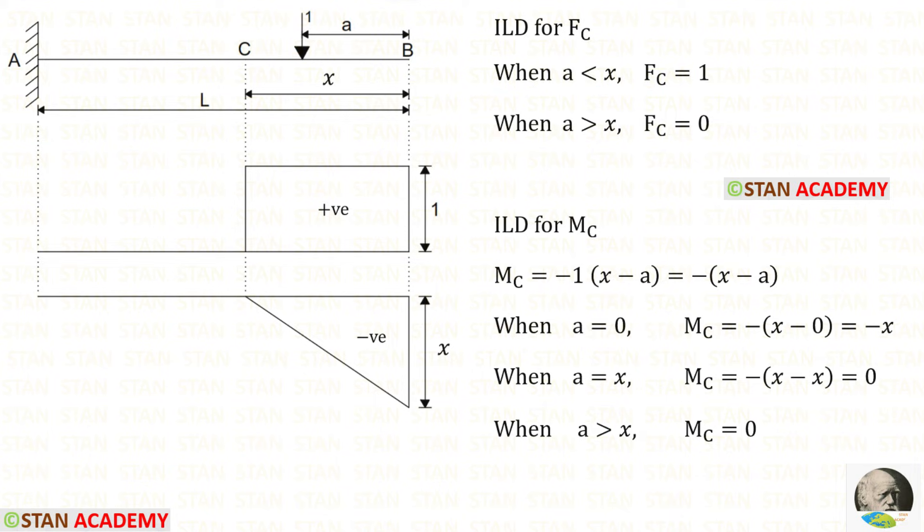Suppose the unit load is just left of C. On the right side there is no load, so the shear force at C will be 0. Using these two values, we can draw this diagram.